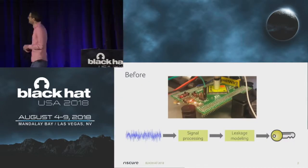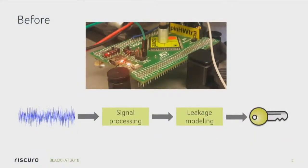Before, when we were doing side-channel analysis, the main steps are: we take a chip, we measure its power consumption, we do some fancy signal processing, we do some leakage modeling, and then out comes the cryptographic key — if we're successful. If you look at academic literature, they've studied a lot of this leakage modeling and the key retrieval part, which is kind of the science in side-channel analysis. But there's also really an art and human skill involved in getting your signals acquired in the right way and transforming them so that you can actually do the leakage modeling and key extraction.